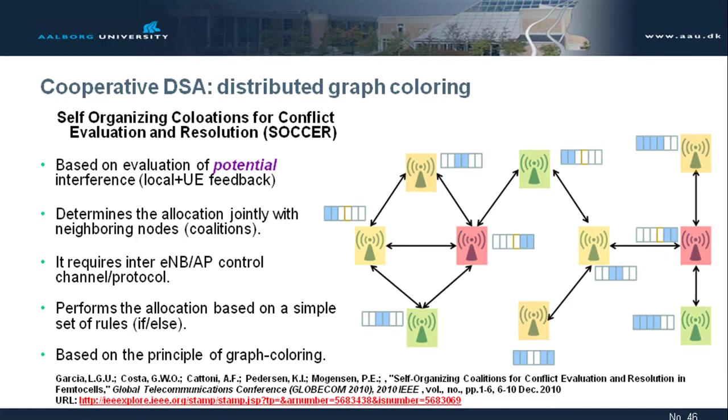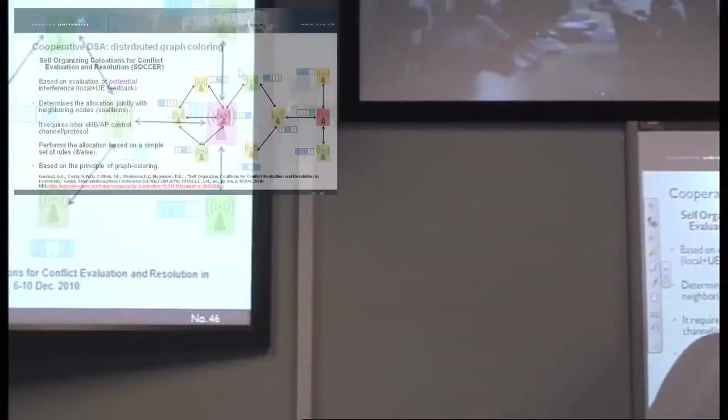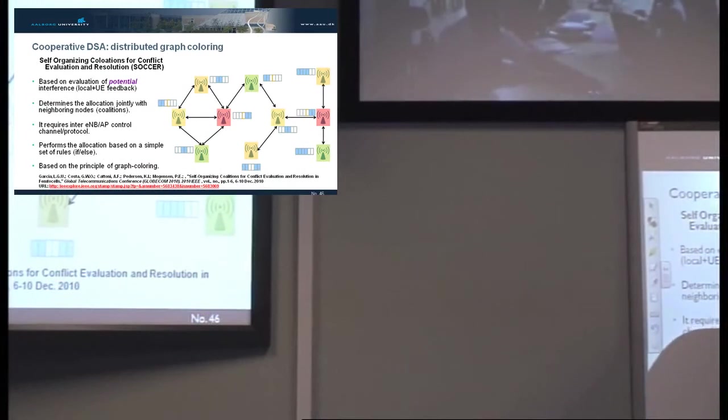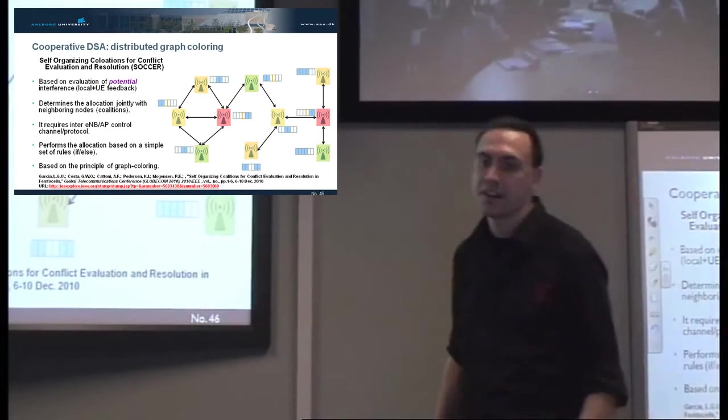This one is based on the same evaluation of potential interference from local UE feedback. Each cell gets its own decision, but they are able to agree on which set of channels to use. We establish a direct agreement depending on the clique size of the graph. The clique is the maximum size of a fully connected graph. What we try to do is optimize the allocation given the clique size, because the clique tells me how many neighbors I disrupt basically.